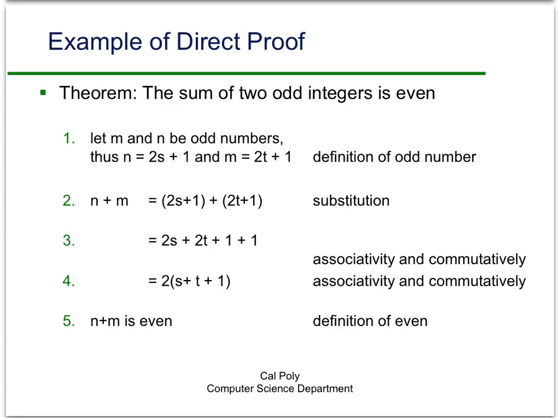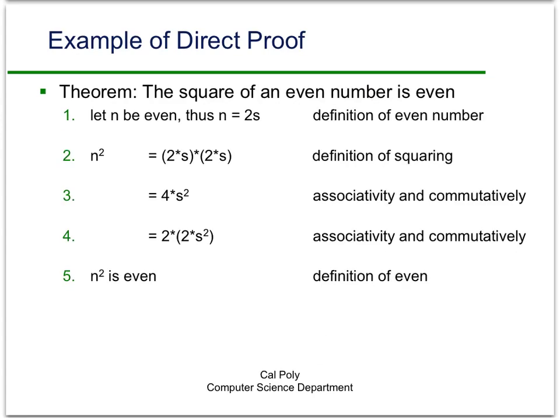So we can conclude then, that n plus m is two times some integer. We know this is an integer because s is an integer, t is an integer, and one is an integer. So since n plus m is two times some integer, then n plus m is even. And that follows from the definition of even.